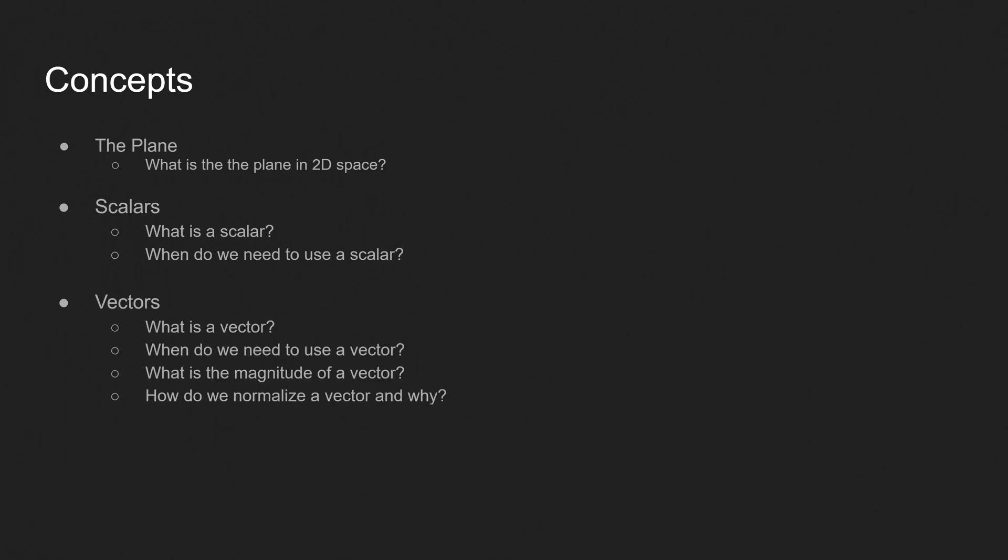So the first thing we're going to talk about is the plane. What is the plane in 2D space? And then we're going to talk about scalars. What is a scalar? When do we need to use a scalar? The third thing is going to be vectors. What is a vector? When do we use a vector? What's the magnitude of a vector? And how do we normalize a vector and why would we want to do that? The fourth thing is going to be velocity. What's velocity and how do we calculate velocity?